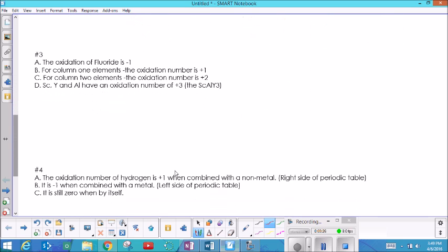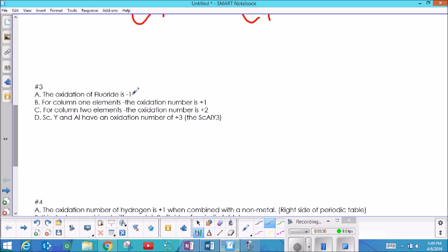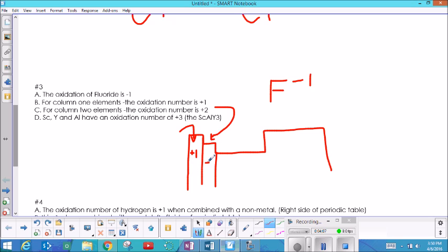Rule number three has a variety of different things in it. Rule number three says fluoride, that's an F, has a minus one charge. Column number one elements on the periodic table—this is talking about those columns—so column number one is the first column. Everybody in that column is a plus one. And column number two is the second column. Everybody in that column has a plus two charge.